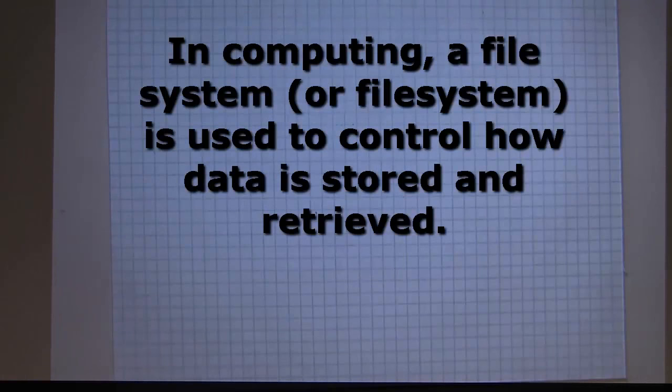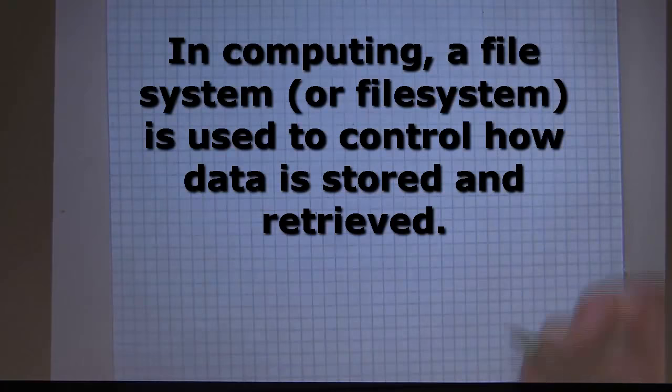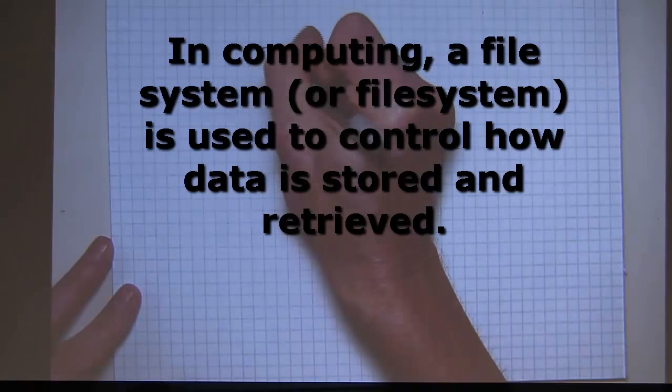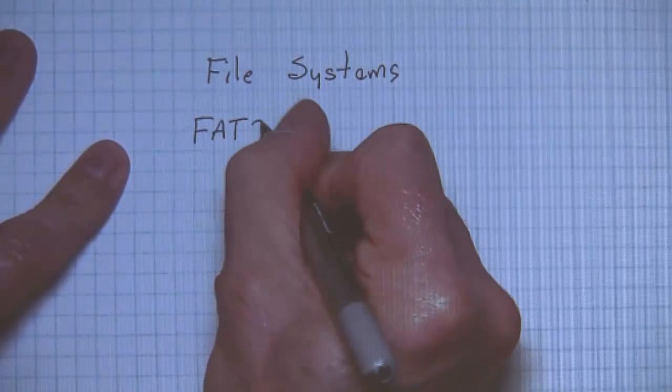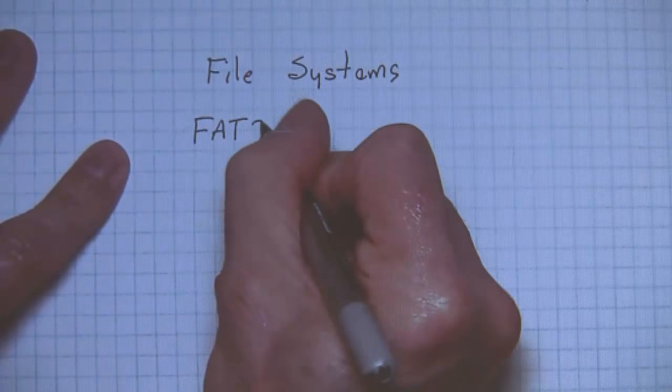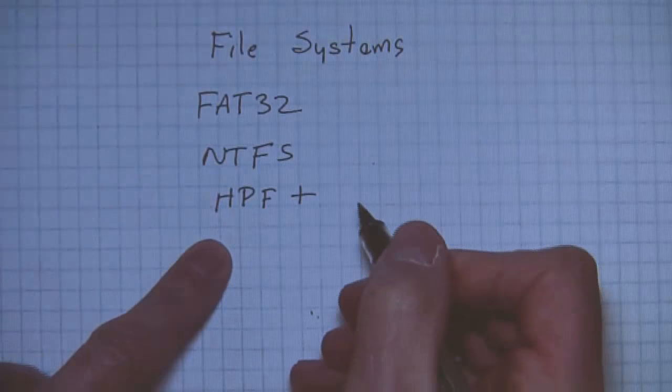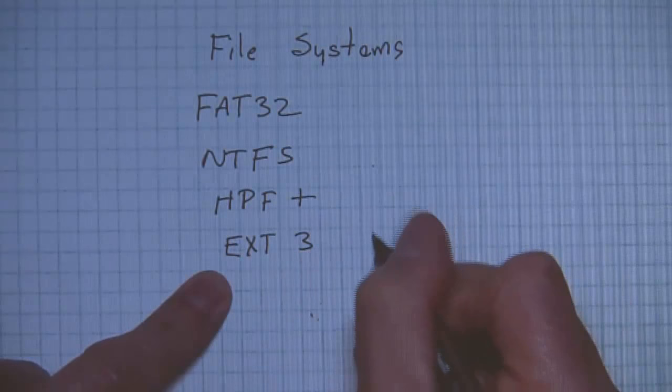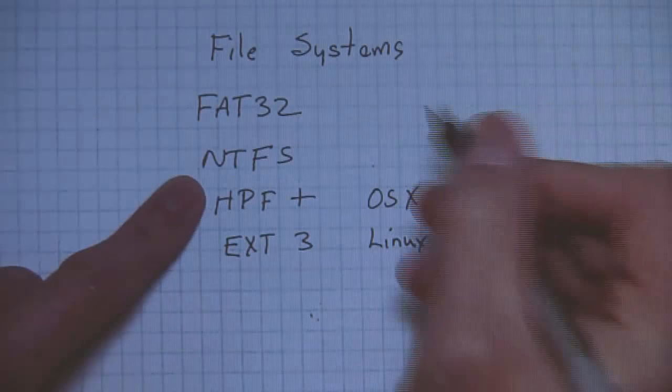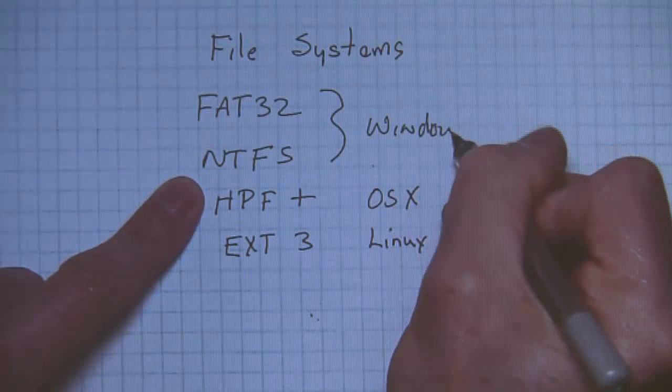Now I want to talk about file systems. Once we partition this hard drive, we've got to put a file system on it. So let's start with file systems. There's FAT32. There's NTFS. There's HFS plus, which is used by the Mac OS. And there's extended three, which is used by Linux. This is the OS X. This is all Windows.